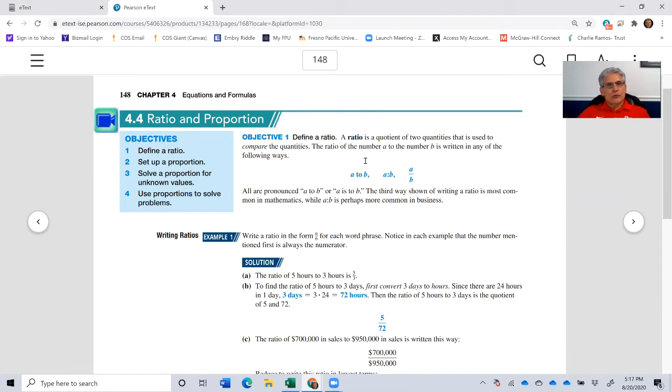Section 4.4 covers ratio and proportion. The first thing we want to do is define a ratio. A ratio is a quotient, remember that involves division, a quotient of two quantities that is used to compare the quantities.